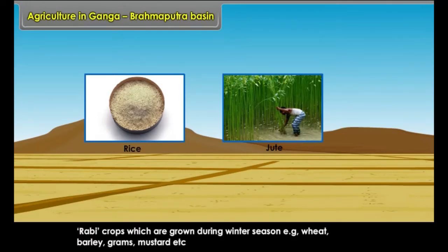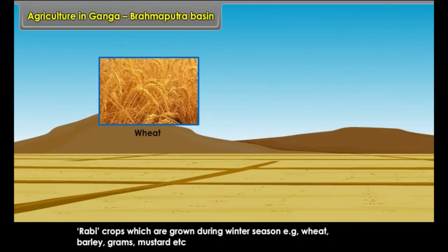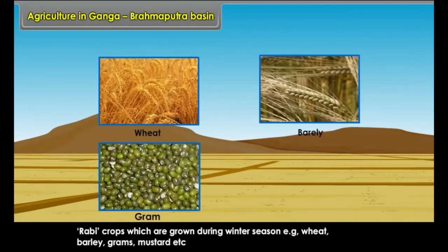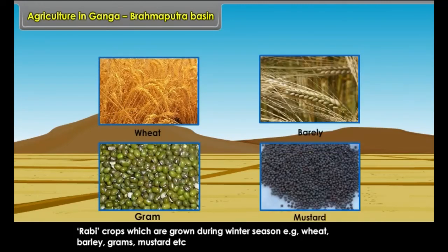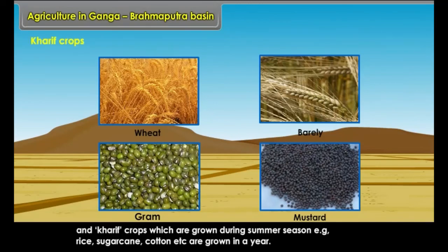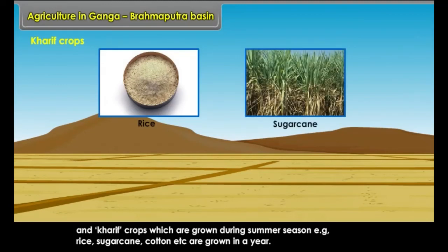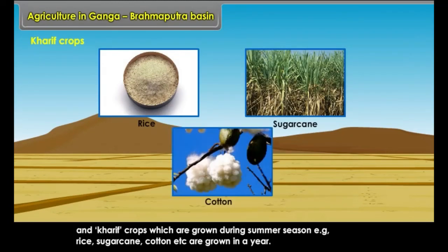Rabi crops, which are grown during the winter season — e.g., wheat, barley, gram, mustard, etc. — and Kharif crops, which are grown during the summer season — e.g., rice, sugarcane, cotton, etc. — are both grown in a year.